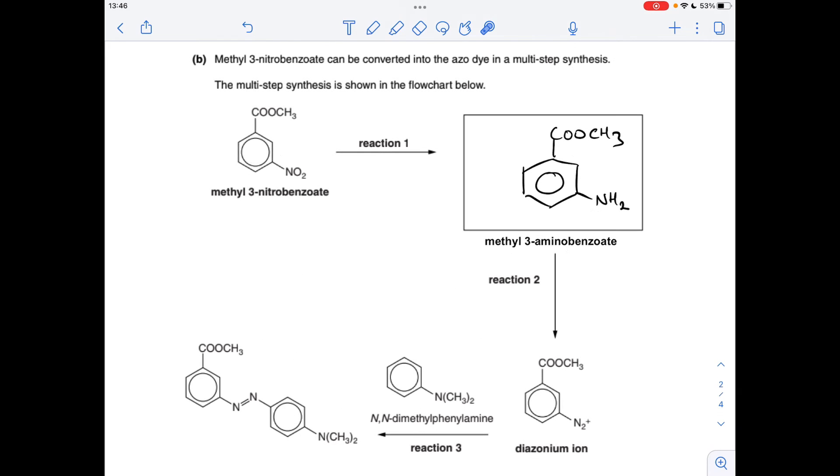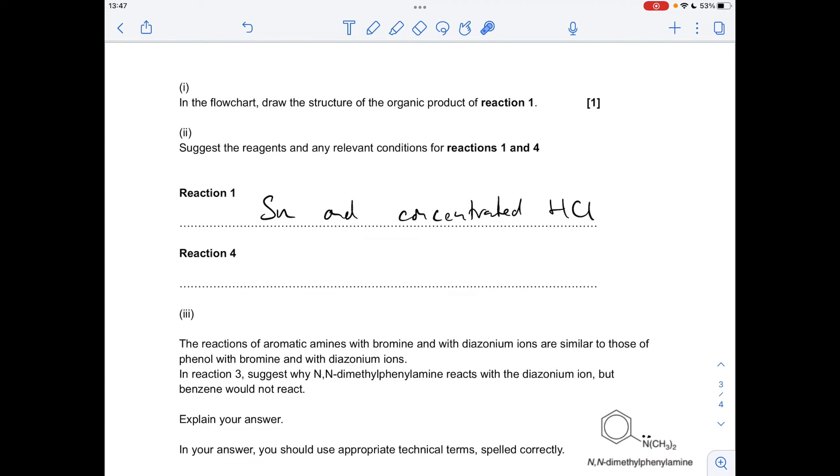So moving on to the flow chart now, we'll have the name for this: methyl three-amino benzoate. So basically all that's changed is the nitro group has become an amino group, and to bring about that reduction of the nitro group to the amino group we need to react the nitro compound with a mixture of tin and concentrated HCl.